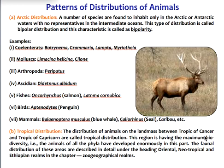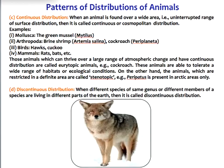Tropical distribution refers to the distribution of an animal on land mass between the Tropic of Cancer and the Tropic of Capricorn. This region has the maximum biodiversity. Continuous distribution is when the animal is evenly distributed and found over a wide area in an uninterrupted range — this is called continuous or cosmopolitan distribution.